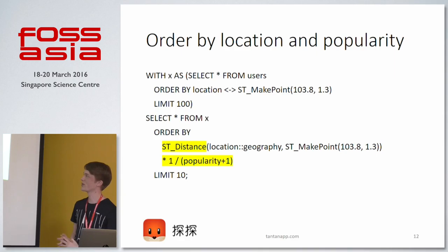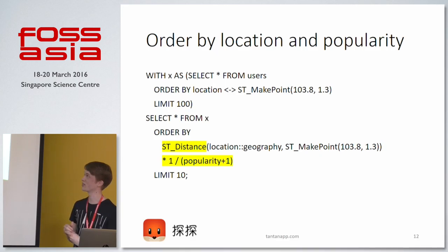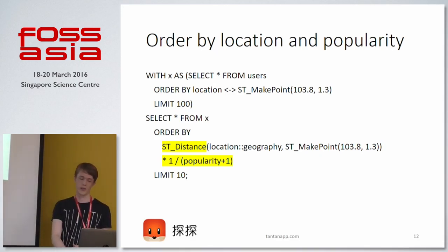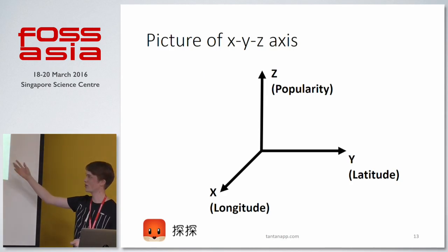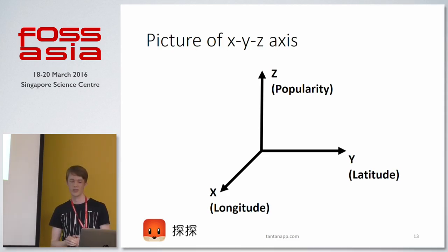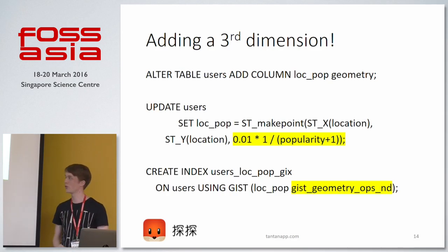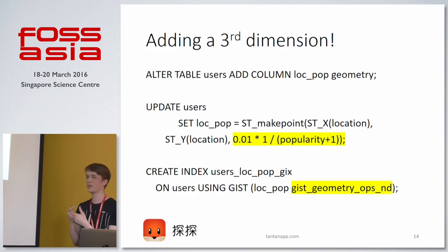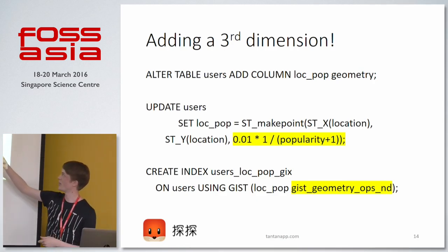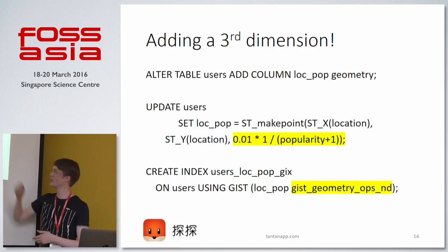Now the question is how we can make this into a 3D query so we can use an index for the second part. The key insight is that we can put popularity on the z-axis — so we have longitude, latitude, and then popularity going up. Transformed into SQL, we add a column for location_popularity using the same geometry data type, and when filling it with data we use MakePoint with x, y, and the popularity value. Then we create an index on this new column, and the important thing is you need to specify that you want more than two dimensions.